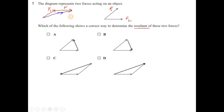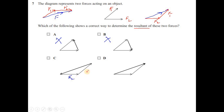Alternatively, join the head of F2 with the tail of F1. Options A and B are eliminated. Options C and D both show head-to-tail addition, but in option C the resultant arrow points in the wrong direction — the resultant should point toward the last head. So the answer is option D.